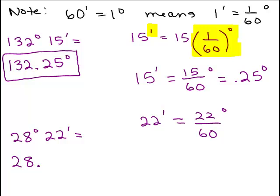Well, this one doesn't come out to a decimal that terminates. So we could just put that on our calculator, 22 divided by 60. And we're going to have to round that.